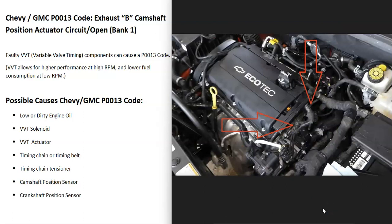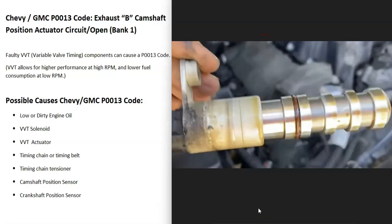It could also be a camshaft position sensor or possibly a crankshaft position sensor, although usually when there's an issue with these, you'll get other codes too — so pay attention to any additional codes. By far the most common problem with the Chevy or GMC P0013 code is something going on with that exhaust VVT solenoid.